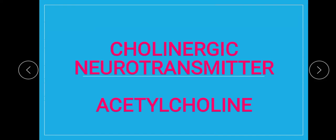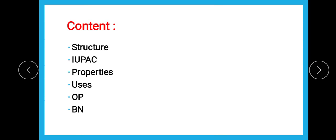Hello dear learners, today we are going to talk about the cholinergic neurotransmitter, that is acetylcholine, with respect to pharmaceutical chemistry 2. Acetylcholine is the neurotransmitter involved in the parasympathetic system. The autonomic nervous system is subdivided into two: the parasympathetic system and the sympathetic system. The topics we are going to discuss are its structure, IUPAC name, properties, uses, official preparations, and brand names.